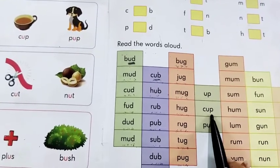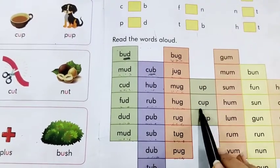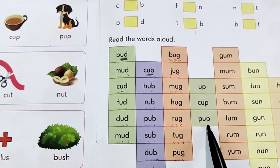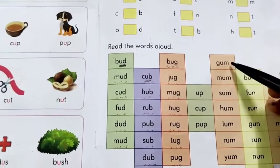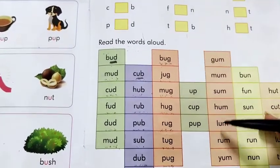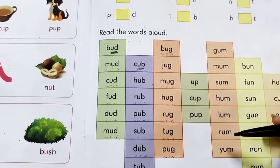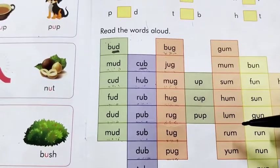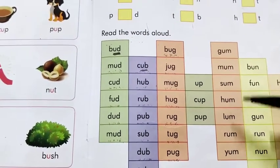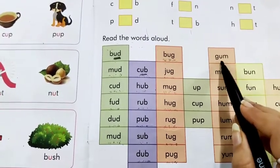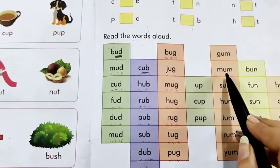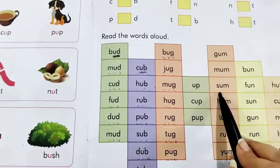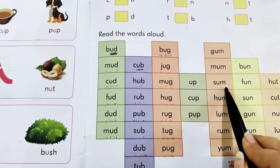Now, here in this line we have some three letter words made by the use of U. M-U-M, the Um two letter word family. Shall we start? G-U-M, Gum. M-U-M, Mum. S-U-M, Sum.